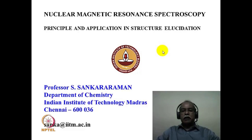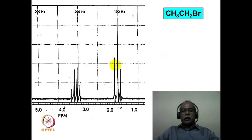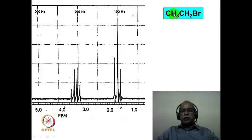Let us start with a very simple example: the spectrum of ethyl bromide. Ethyl bromide contains a CH3 and a CH2 group. The CH3 will appear as a triplet because it will be split by the adjacent 2 hydrogens of the CH2. This triplet appears in the region of 1.6 ppm or so. The CH2, which has 3 adjacent hydrogens, will be split into a quartet appearing around 3.5 ppm. The CH2 is directly attached to electronegative bromine, which is why its chemical shift value is much higher than that of the CH3.